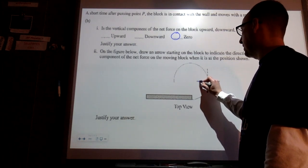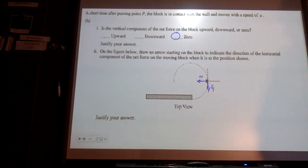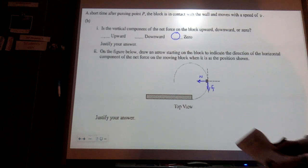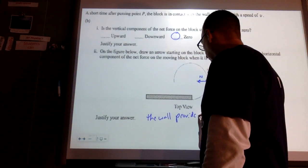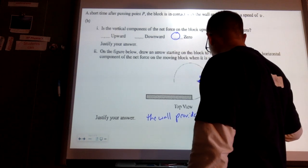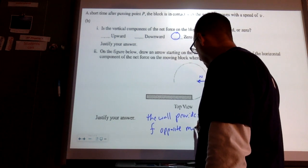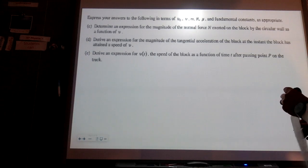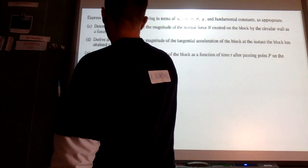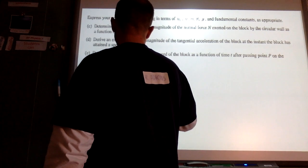On the figure, there's a normal force on the block from the wall, and since it's sliding along the rough wall, friction acts opposing the motion. The wall provides a centripetal turning force, and friction opposes the motion tangentially. Derive an expression for the magnitude of the normal force exerted on the block by the circular wall as a function of V: F-net equals MV squared over R, so N equals MV squared over R.